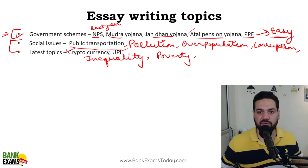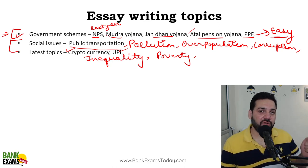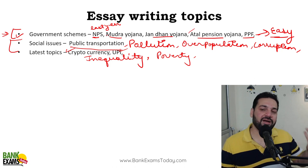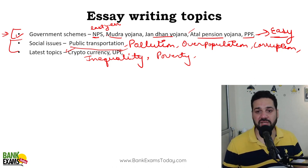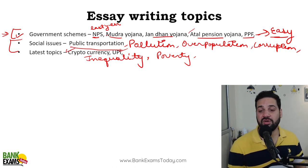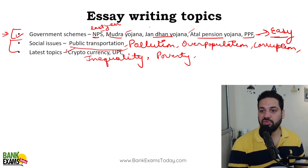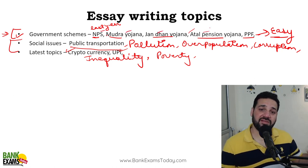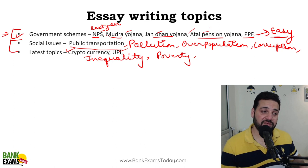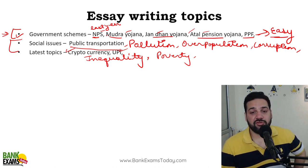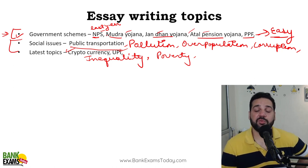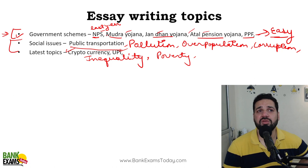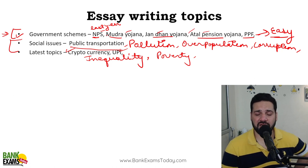Writing generally won't get you good marks. Good marks will come from topics like NPS, Mudra Yojana, Jandhan Yojana, Atal Pension Yojana, and PPF — because you know a lot about these topics. For example, if I talk about Mudra: you can start with why it was started, what its objective was — that gives your essay a clear structure, which is difficult to do with crypto or UPI if you don't know them in depth.